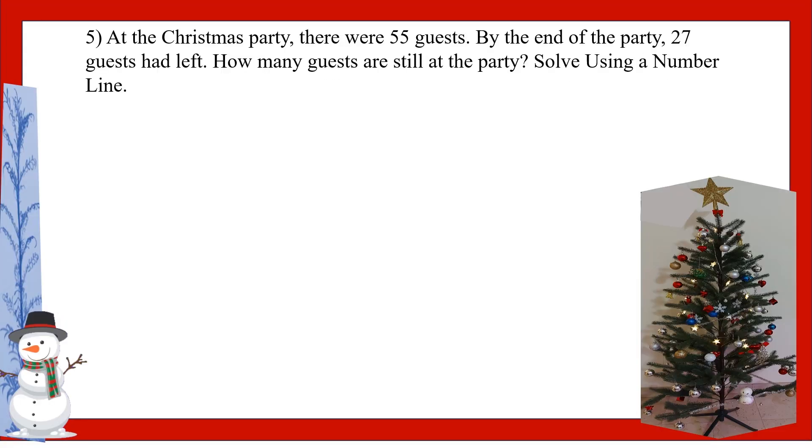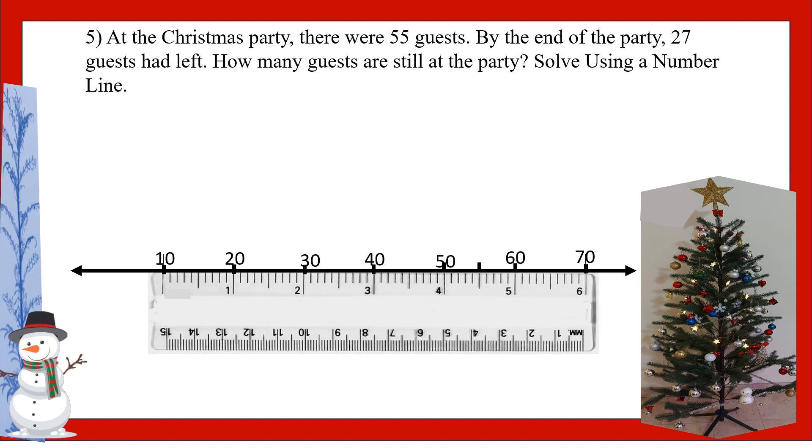Here is the 5th question. At the Christmas party there were 55 guests. By the end of the party, 27 guests had left. How many guests are still at the party? Solve using a number line. So again we will take a number line, and here I have marked from 10 to 70. Step 1 is start at 55 because there are 55 guests. 55 is 5 divisions after 50.